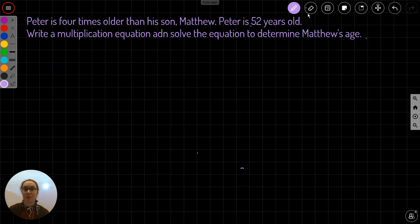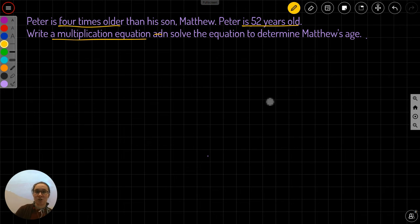This is example two of lesson 3.5, solving multiplication and division equations. We have a word problem. Peter is four times older than his son Matthew. Peter is 52 years old. Write a multiplication equation and solve the equation to determine Matthew's age.